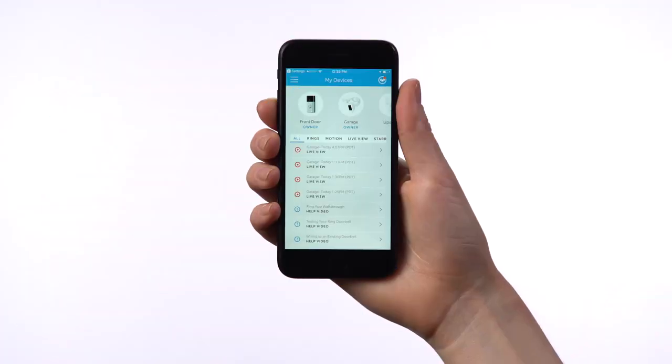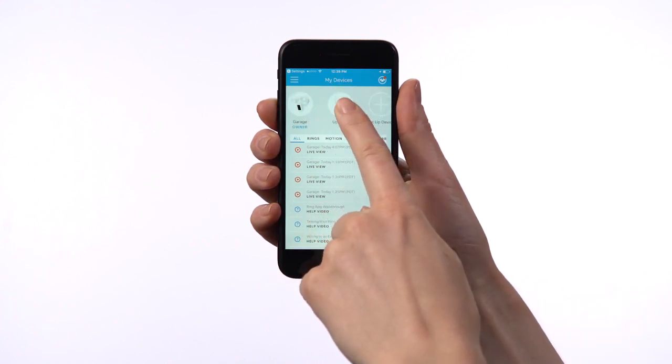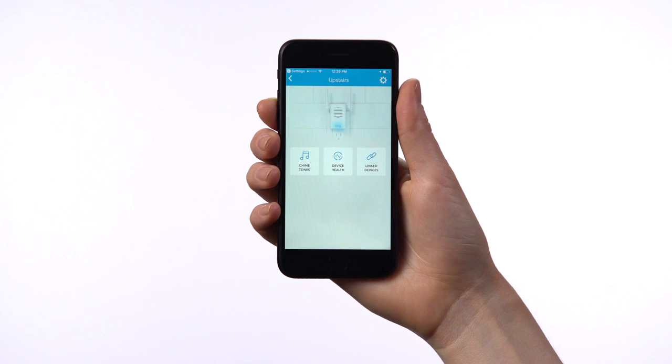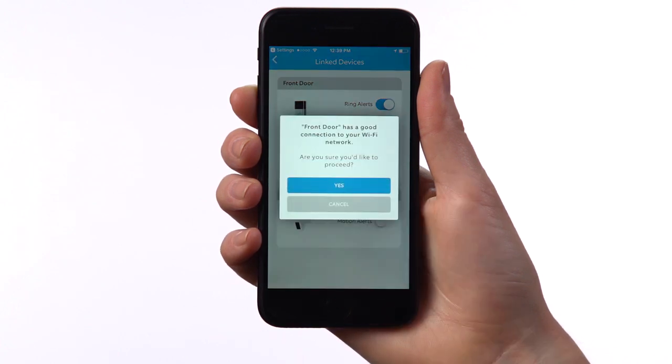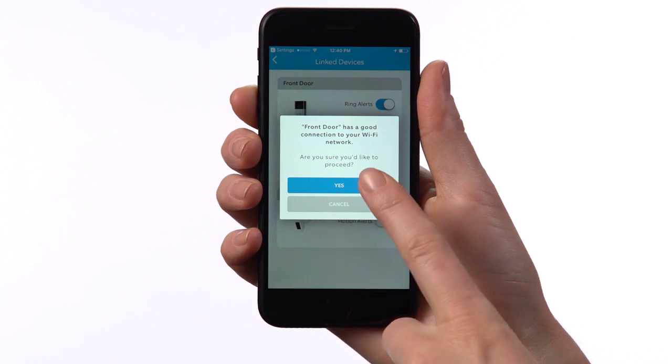To connect an existing Ring product to your Chime Pro, open the Ring app and tap your Chime Pro to open its settings screen. Then tap Linked Devices. Find the device in the list, then tap Connect to Chime Pro. Then follow the in-app instructions to complete the connection.